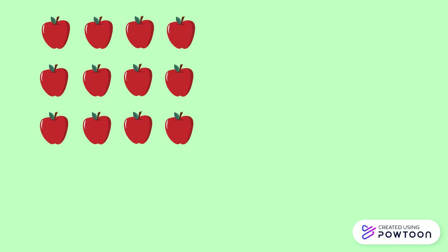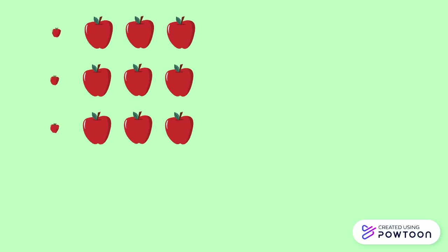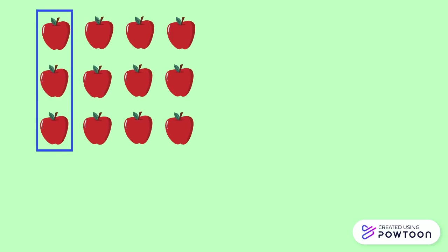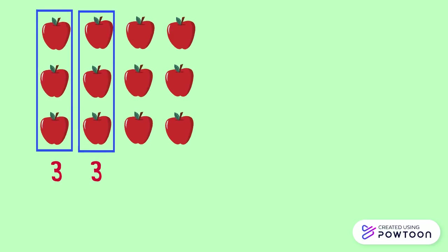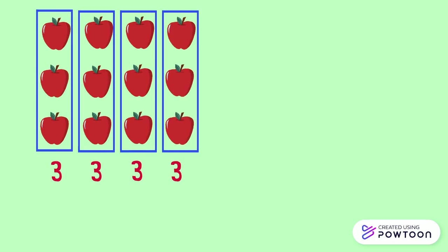Notice that these apples form a rectangular shape, or we can also say a rectangular array. Now we will group these apples by columns. The first column contains three apples, the second column contains also three apples, as well as for the other columns.